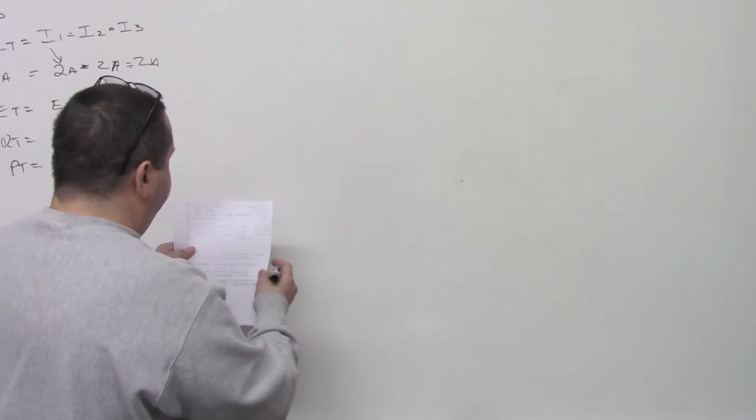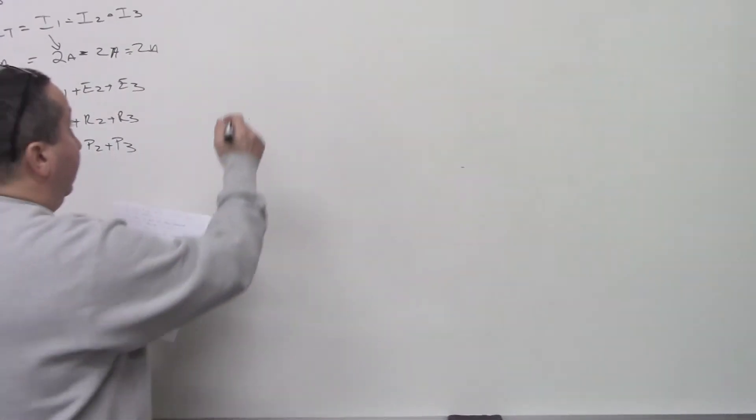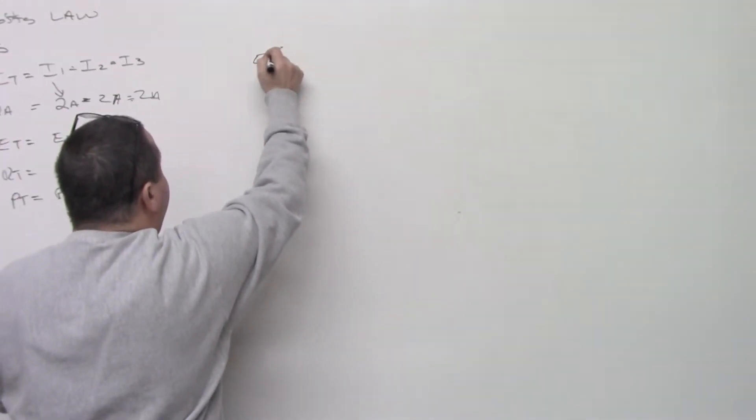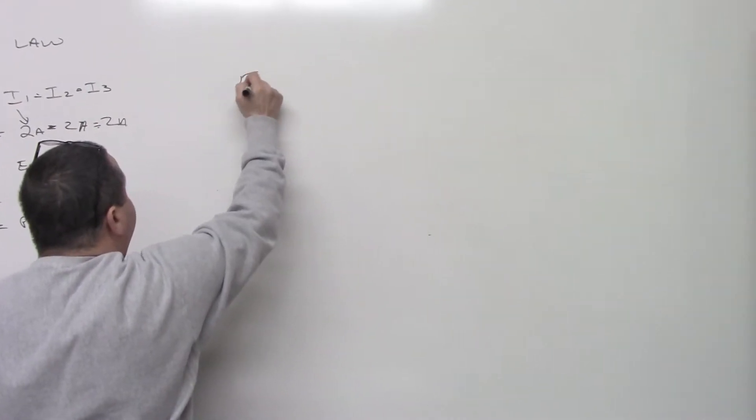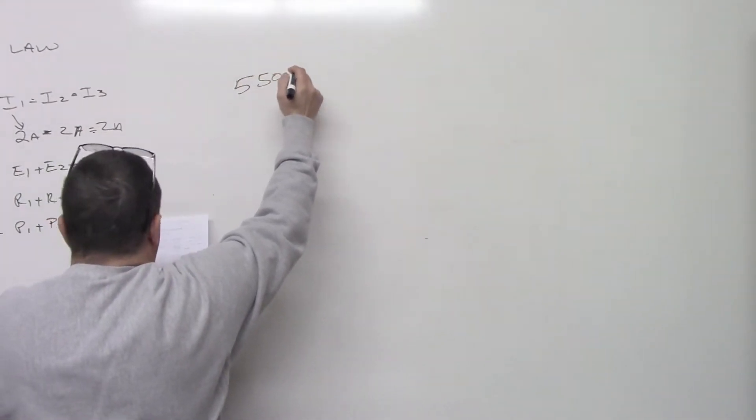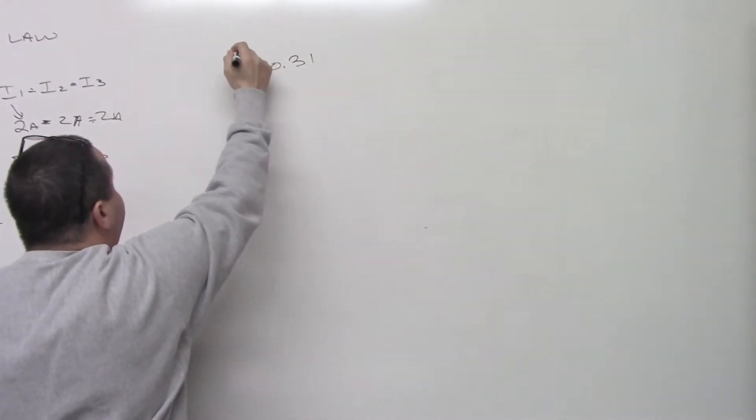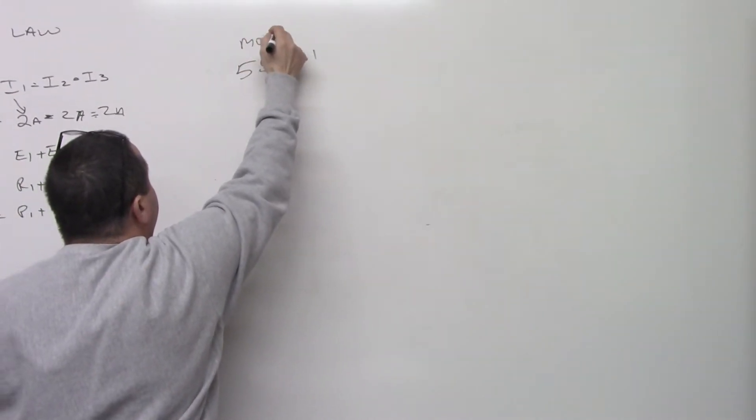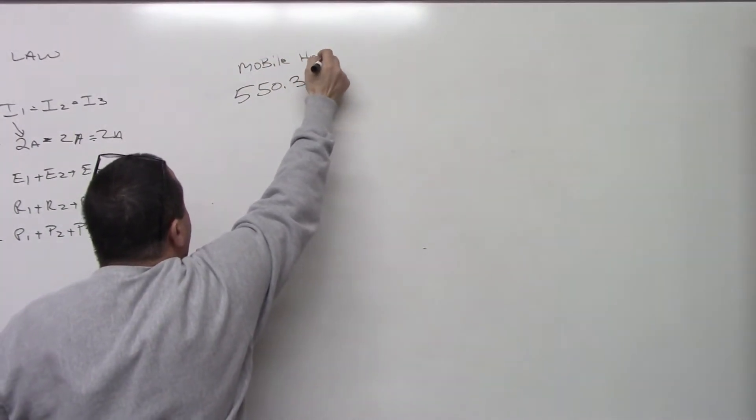So basically what we're going to do is we're going to go into article 550, 550.31. 550 is mobile homes.